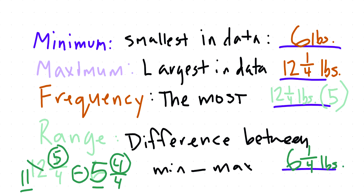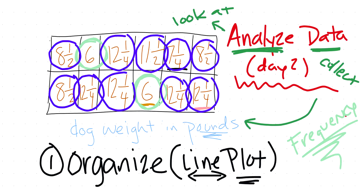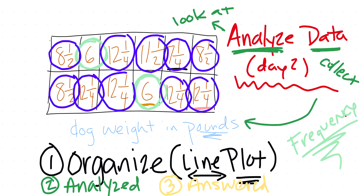Looking at one data set can take a long time, which is why we only looked at one today. The three steps we followed are: organize — using the line plot; analyze — looking at the data; and answer — answering the questions. Organize, analyze, and answer is the way you want to approach your data. That's day two of data analysis. Remember to ask questions — that's the whole goal of learning.